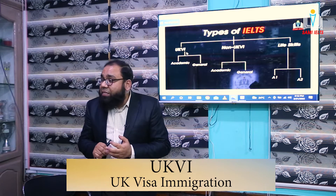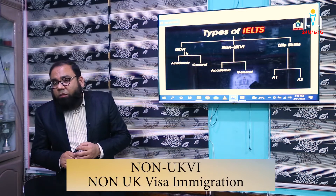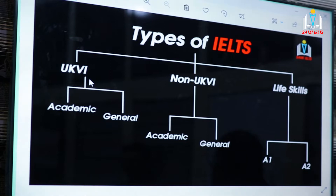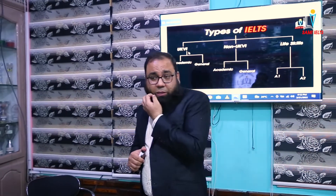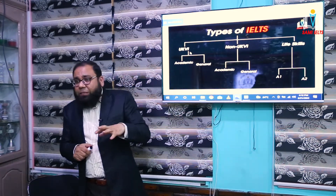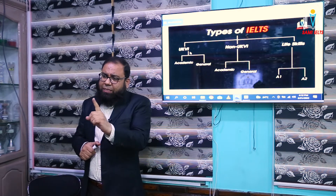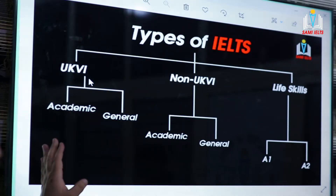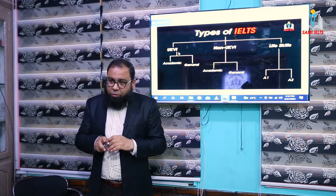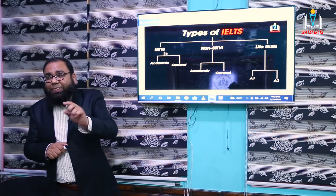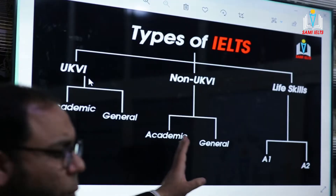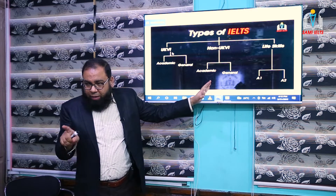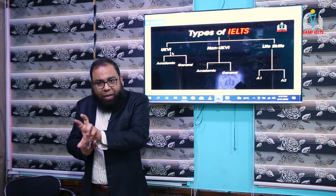UKVI stands for UK Visa and Immigration, and non-UKVI stands for non-UK Visa and Immigration. If you want to study in the UK, I would strongly recommend going with UKVI IELTS. Don't go with non-UKVI because these days 100% of universities accept UKVI. If you want to go to Australia, Canada, Germany, Italy, or Norway, I would recommend non-UKVI.